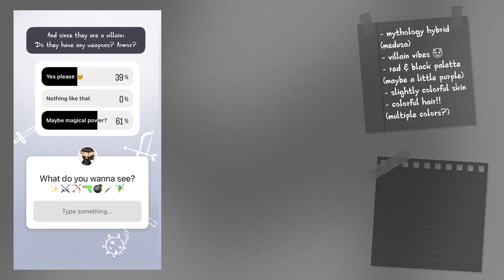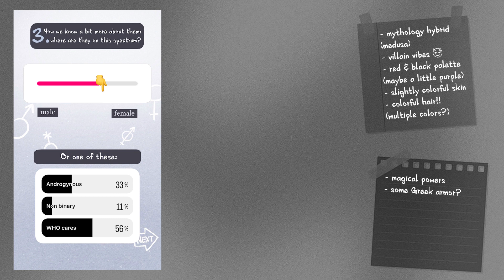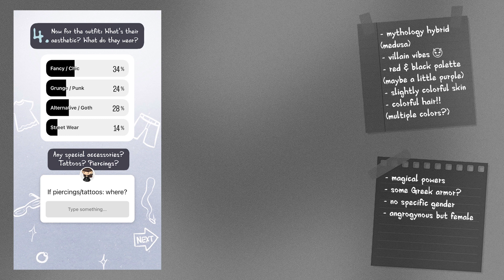Coming back to the villain thing, you want to see either weapons on our character or magical powers, which I would prefer because of the mythology background. I will also think about some kind of armor — the kind that Greeks wore. The next question was gender, and you agreed that they will not have a specific one and will look androgynous but slightly more female-presenting, which I like a lot. The question about style and aesthetic was pretty close but in the end fancy came out on top. Maybe I will add a few gothic elements because that would fit the character well, especially with a color palette of red and black.